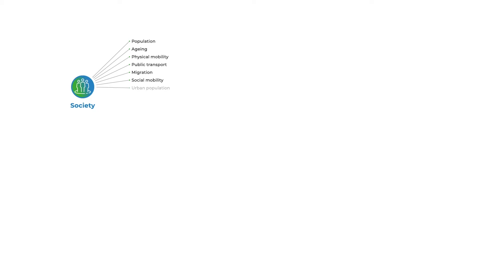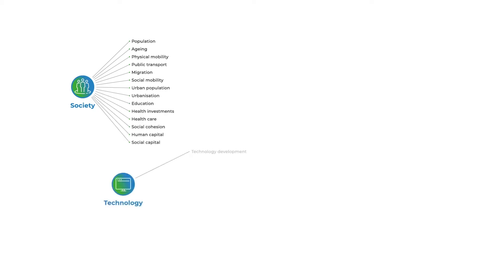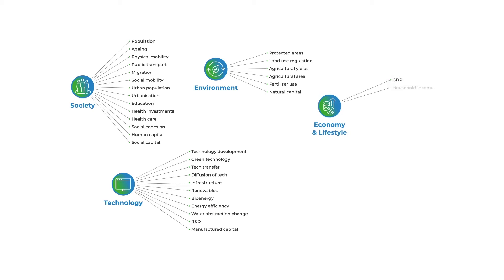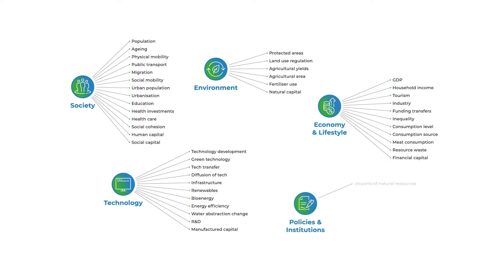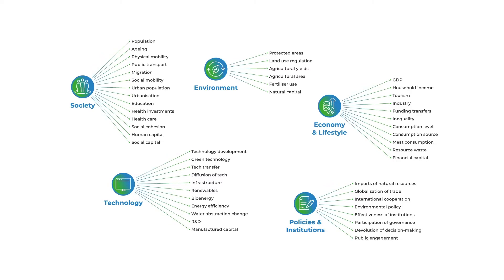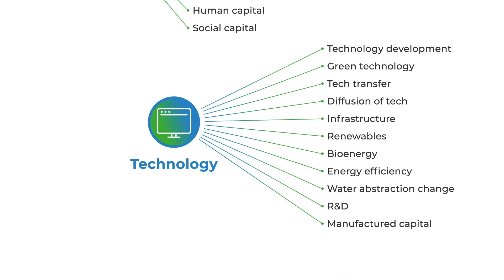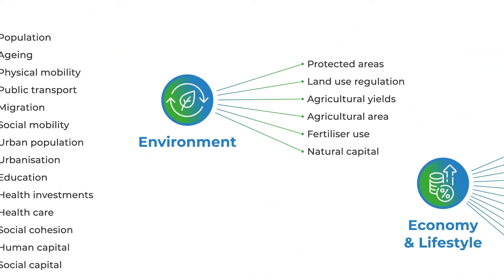The five scenarios have very different outcomes for the UK that can be further investigated, particularly by modelling teams. To use the UK SSPs in modelling studies of climate risk, resilience and vulnerability, a link is needed to connect the complexity of the qualitative narratives to the parameterisation needs of impact models. This link is provided through semi-quantitative trends, which summarise the relative direction and magnitude of changes in 50 socioeconomic variables, covering five categories: society, technology, economy and lifestyle, environment, and policy and institutions.